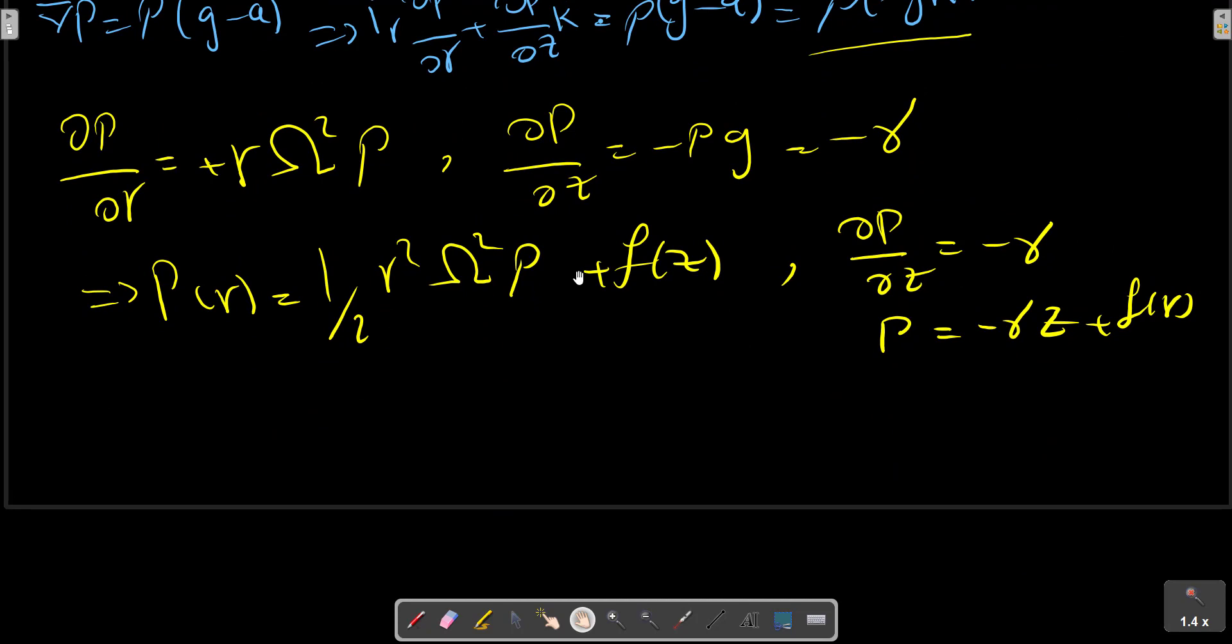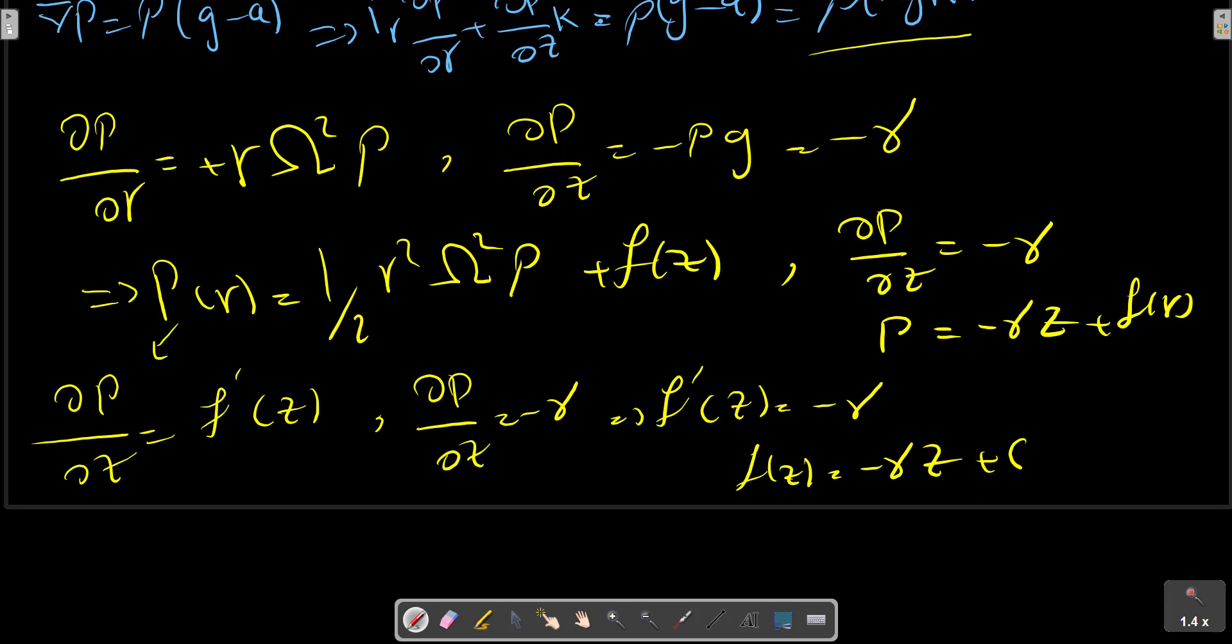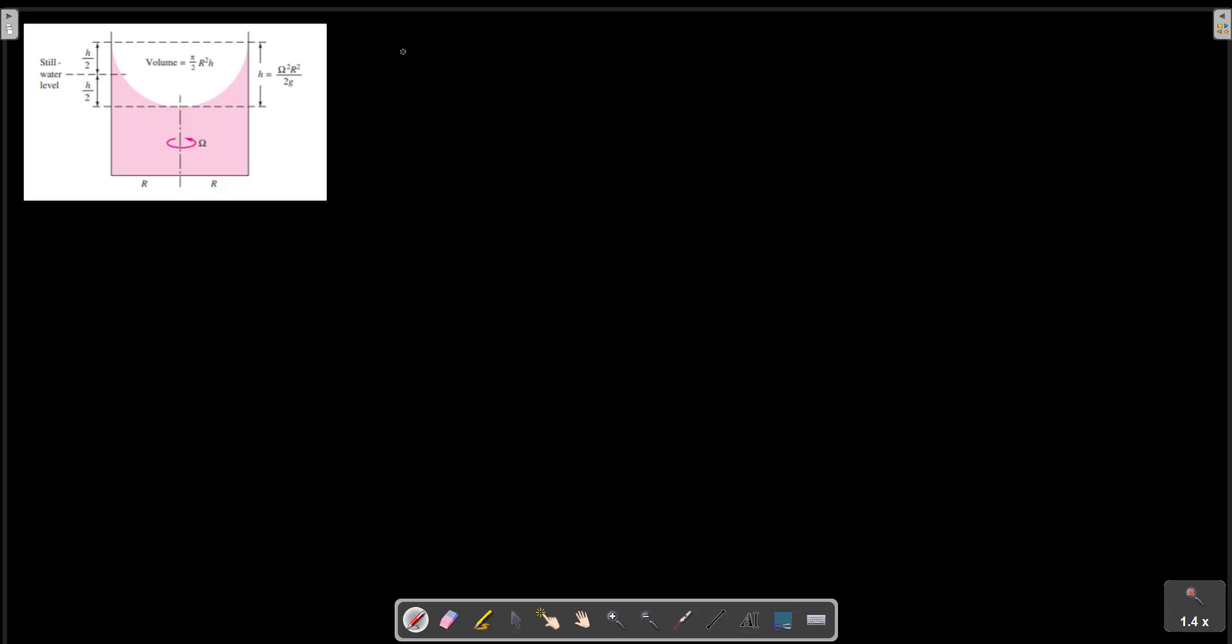There may be some initial conditions for problems so we can calculate these. We can write, for example, partial P partial Z equals F prime of Z equals minus gamma. Therefore F of Z equals minus gamma Z plus a constant. All integration can be used for determining values and properties of a rotating fluid in a container. Consider this picture for an example, so we obtain the relation for P as one half rho R squared omega squared plus F of Z.